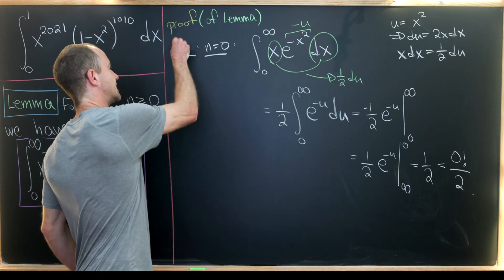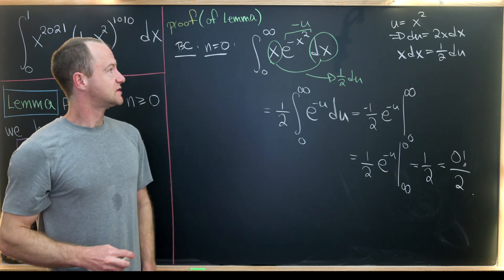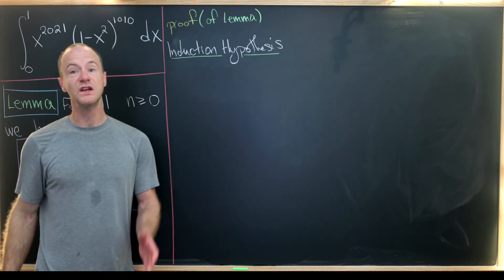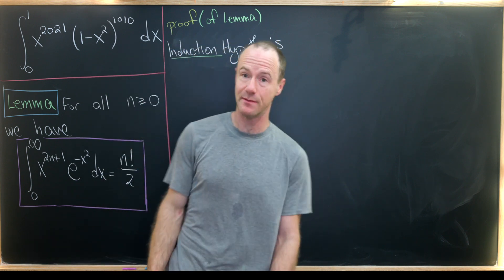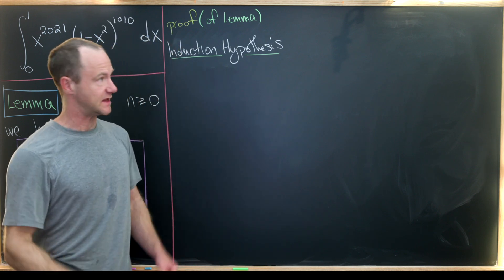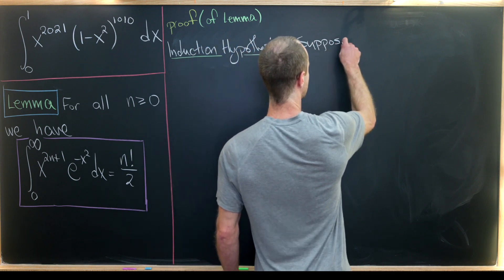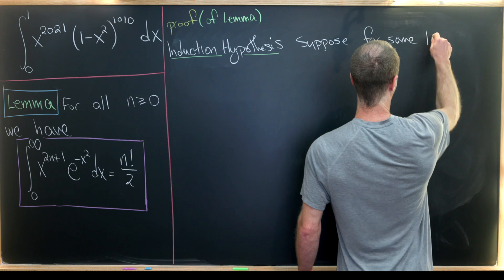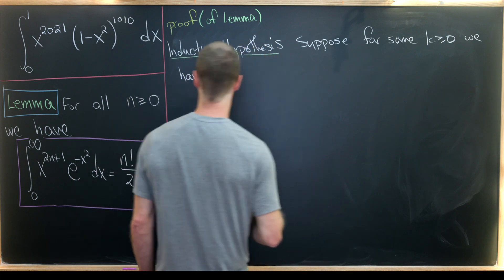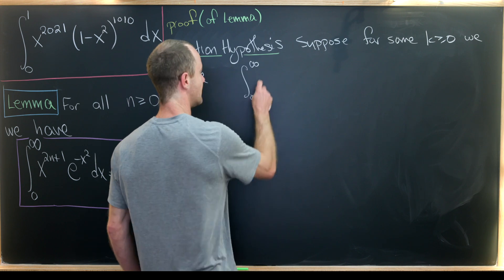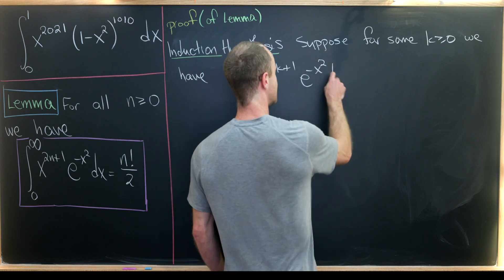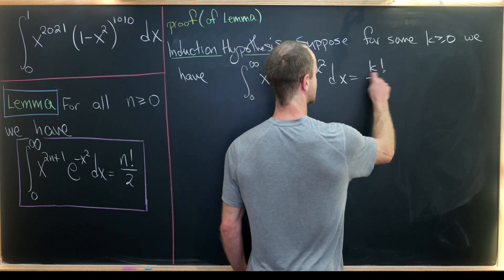That was our base case, not the induction hypothesis. Now let's make an induction hypothesis and prove the induction step. We suppose that for some non-negative integer k, the integral from zero to infinity of x to the 2k plus 1 times e to the minus x squared dx equals k factorial over two.